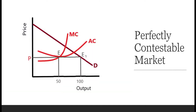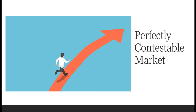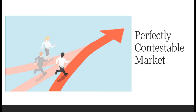In a contestable market, potential competition is as important as actual competition in determining price and output decisions of firms. A perfectly competitive market is also a perfectly contestable market because there are no barriers to entry or exit of firms. If there is a possibility of earning supernormal profits, new firms will enter the market and bring down profits to a normal level. It is the threat of potential entry that ensures existing firms keep prices at a level where they earn only normal profits, that is zero economic profit.